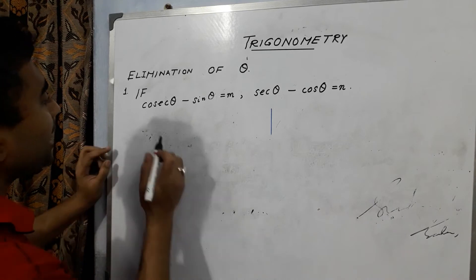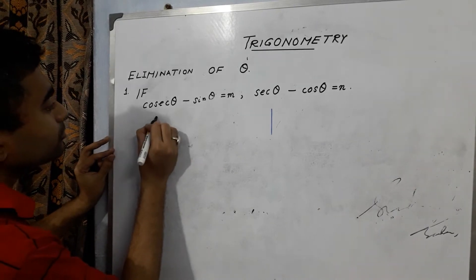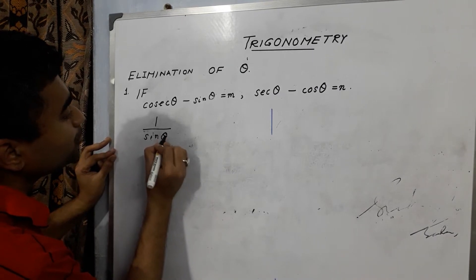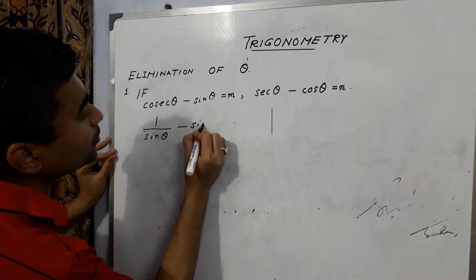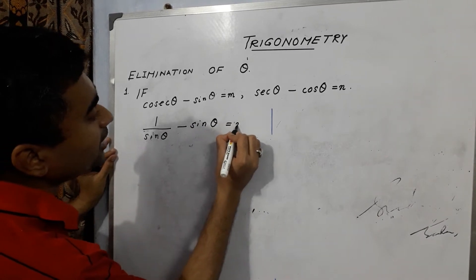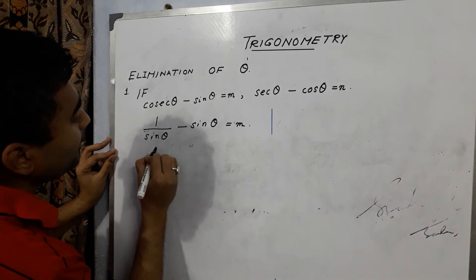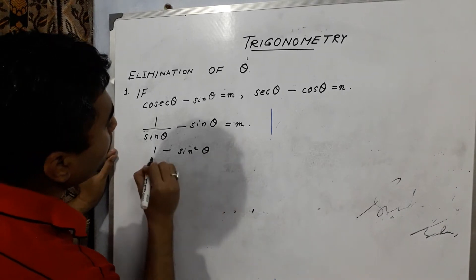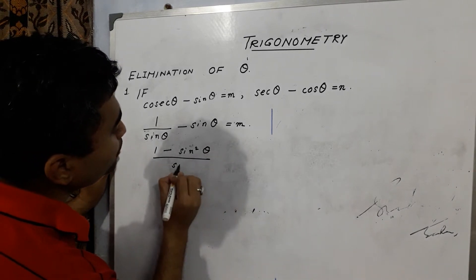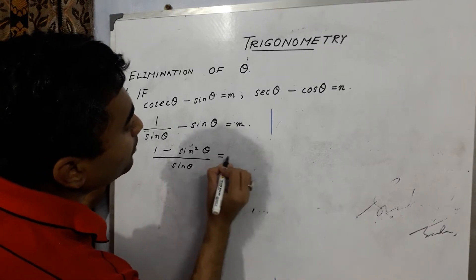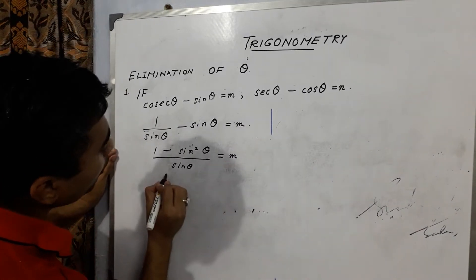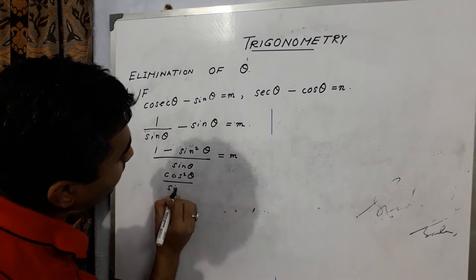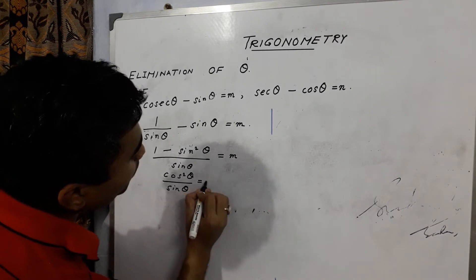So first let us simplify for m and n. Cosec theta can be written as 1 by sin theta, sin theta remains sin theta and this is m. So we can write 1 minus sin square theta by sin theta is equal to m. Hence cos square theta by sin theta is equal to m.